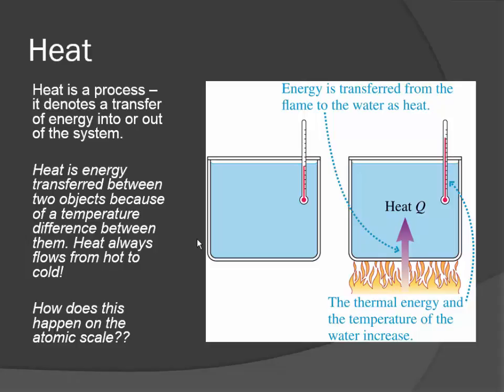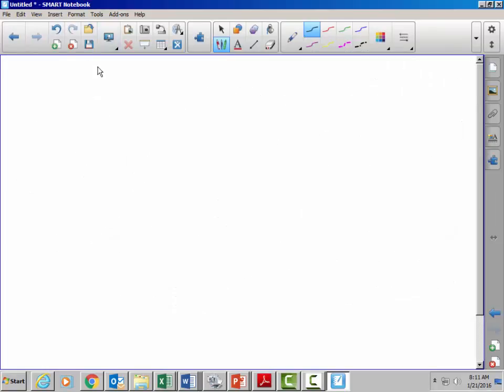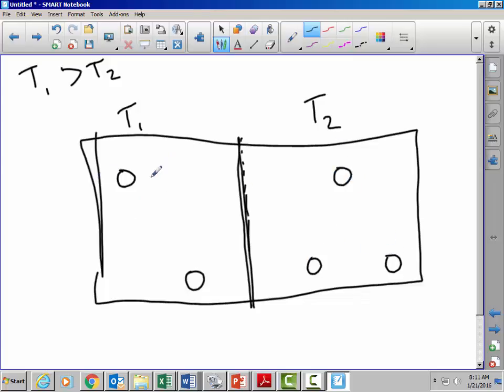So heat is transferred between two objects whenever there's a temperature difference between them. Heat always flows from hot to cold. So how does this happen on the atomic scale? Let's look at a graphic that we can illustrate this with. So let's say we have a container, and this container contains two different gases, and there's a little membrane between the two of them. Let's say this is like T1, and this is T2. And let's say that T1 is much hotter than T2. So this stuff, the gases that are on this side, they have a higher temperature. And then these guys over here, not as much temperature. So these guys will be moving pretty fast, and these guys will be moving kind of slow. Well, let's say this membrane is so thin that the molecules can't transfer between the two sections, but they can still collide with one another between the membranes.